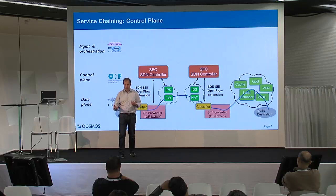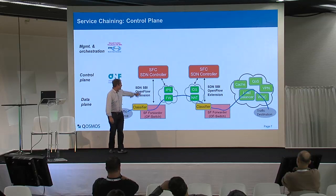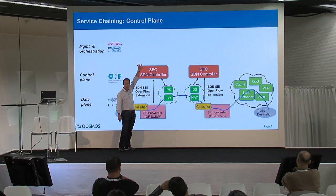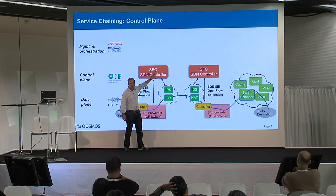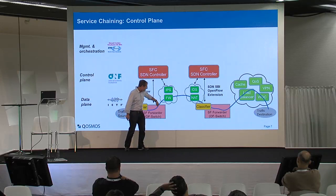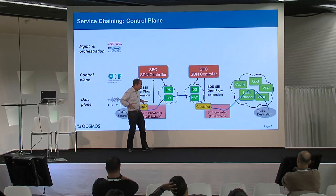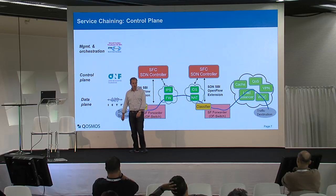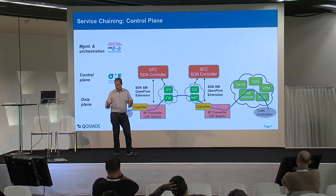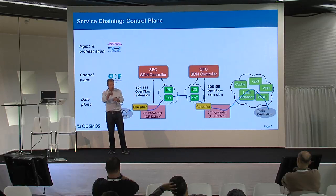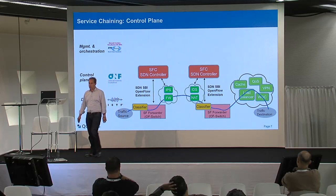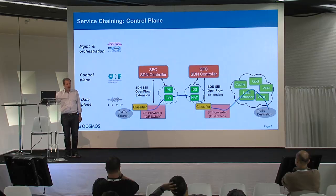You have different options here. REST APIs describe the chains, then the controller computes how that should be deployed in the physical or virtual network. Using an OpenFlow extension or OpFlex protocol, you deploy that into the underlying infrastructure, and you use IETF SFC — NSH or SCH — to do the physical or virtual switching of IP packets.